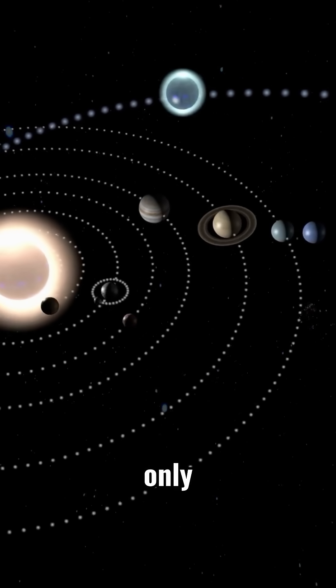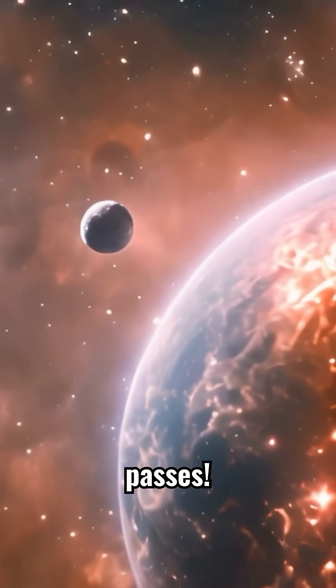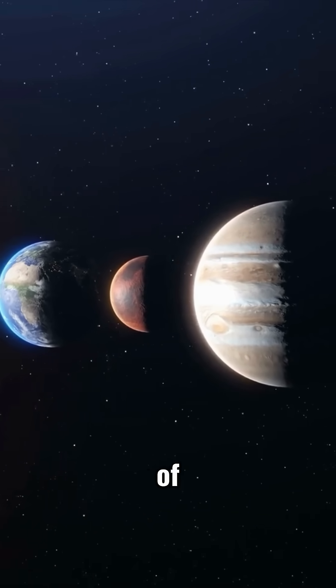Pluto only met two. Rule one: it must orbit the sun—Pluto passes. Rule two: it must be round. But rule three: it must clear its orbit of other objects.